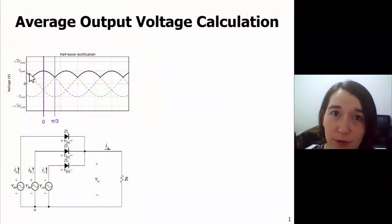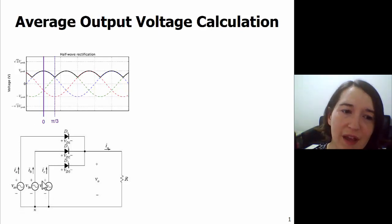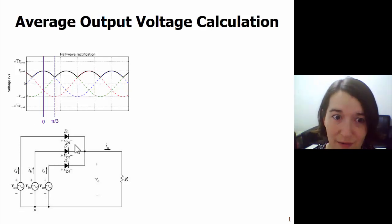Here we're talking about the output voltage calculations for the three-phase half-wave diode rectifier. The output voltage waveform is shown here with the black line.